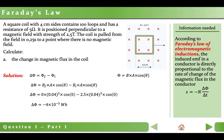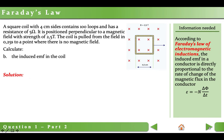Let's proceed to the second part of the question. Now we need to calculate the induced EMF in the coil. Writing Faraday's law of electromagnetic induction: EMF equals negative N times delta phi over delta t. We calculated delta phi in the previous part — it is negative 4 times 10⁻³, and time is 0.25 seconds. So the induced EMF will be 1.6 volts.